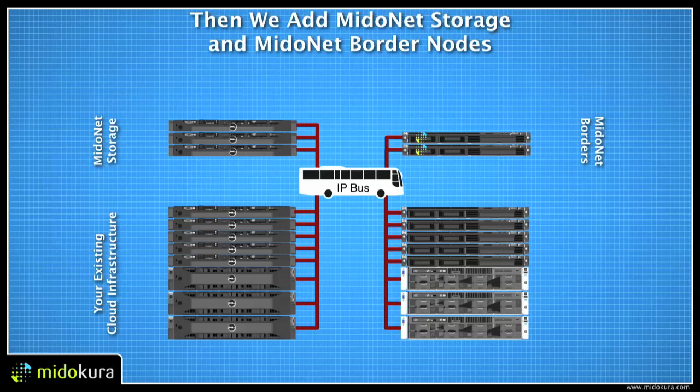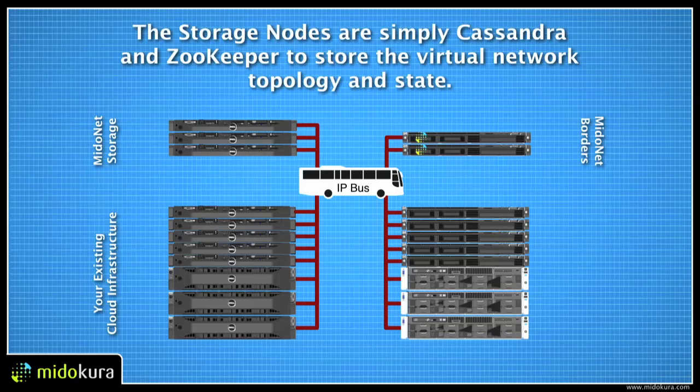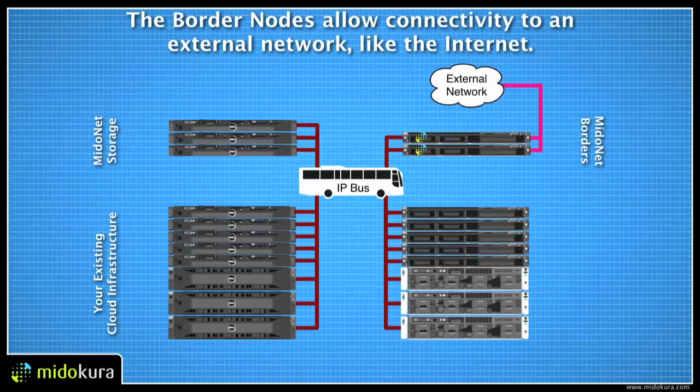Once we install our agents on each one of your hypervisors — these are very thin agents that sit on the hypervisor itself — as well as your border gateways to do BGP, we connect all of these virtually to our backend, which uses Cassandra for reads and writes and stores the virtual and physical topology of the network in ZooKeeper. Our agent also handles the BGP protocol for external network connectivity, and by using BGP we can do multi-data center pathing and load balancing inside of our virtual framework.